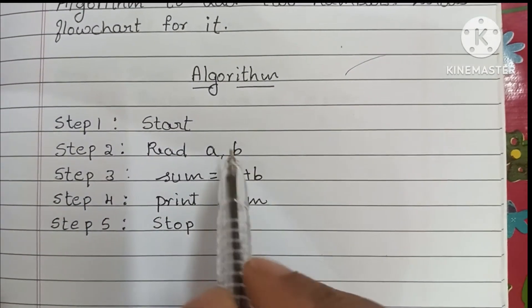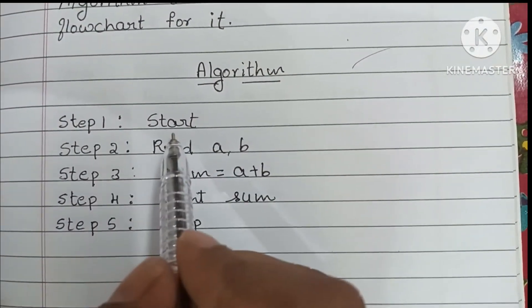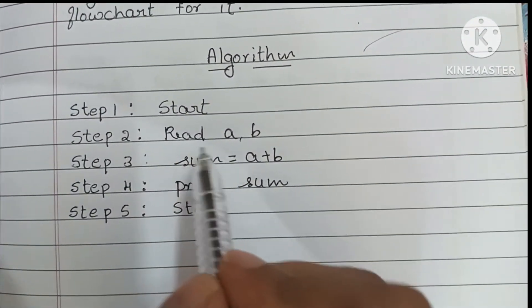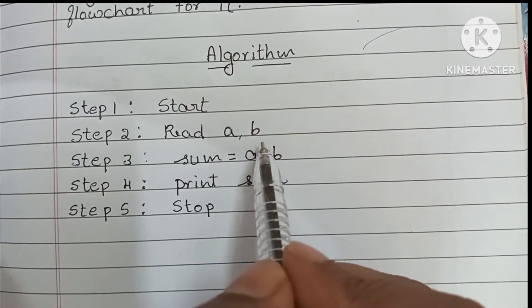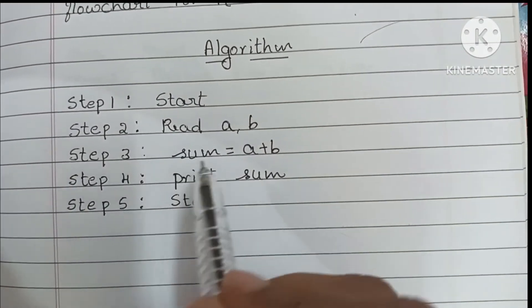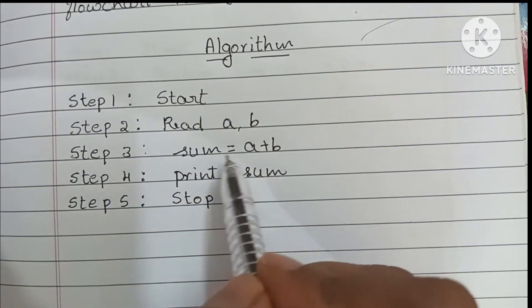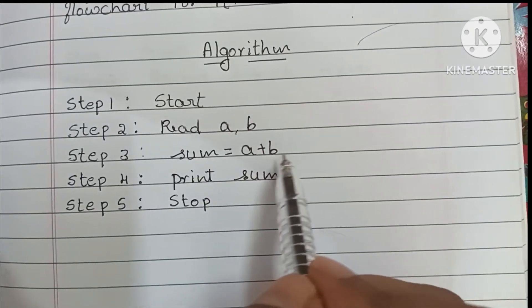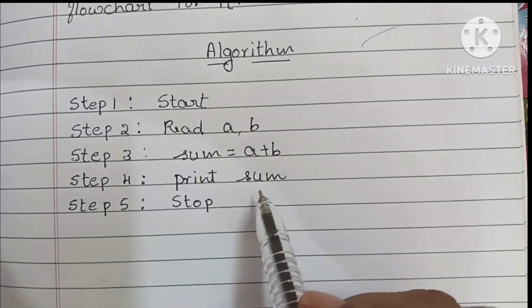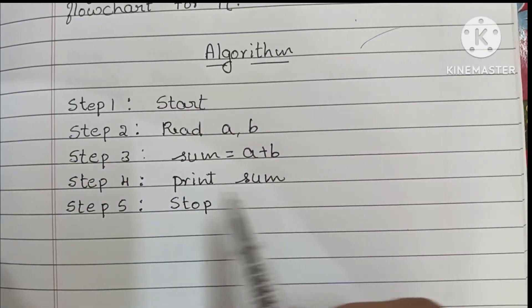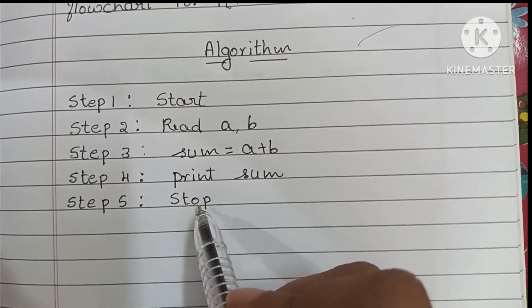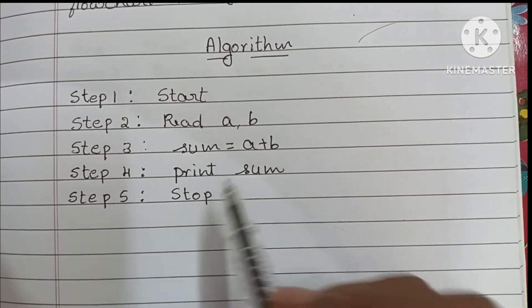To recap the algorithm: step one, always start with the start statement; step two, read two input variables a and b; step three, calculate sum is equal to a plus b; step four, print the sum value; step five, stop the algorithm using the stop statement.